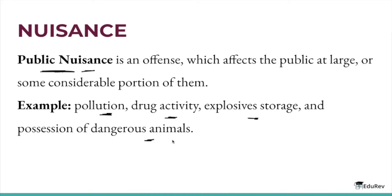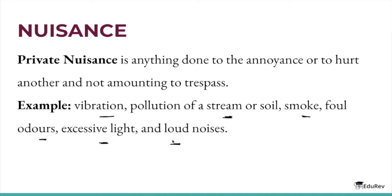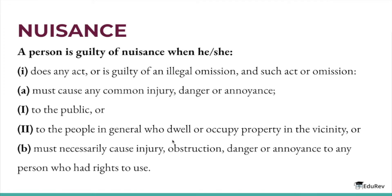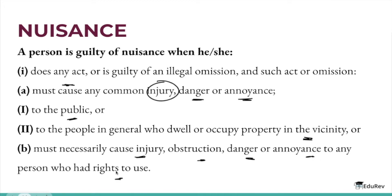So public nuisance is an offence which affects the public at large, whereas private nuisance is an offence which affects a particular individual. A person is guilty of nuisance when he or she does any act or is guilty of an illegal omission, and such act or omission must cause any common injury, danger or annoyance to the public or to persons who dwell or occupy property in the vicinity, or must necessarily cause injury, obstruction, danger or annoyance to any person who had rights to use it.